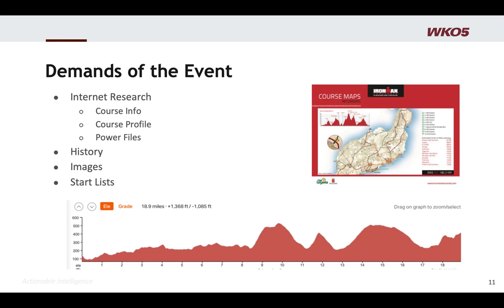Also, a lot of athletes race the same event year in, year out — don't forget their own history, that's very powerful. Don't be afraid to pull images or videos; so many people use onboard cameras from races. If you Google search them, you can get great pictures or videos. I would also look at start lists — go back to the competitive demand. Who are you racing, who typically races at this event? Look at last year's start list and last year's data. That gives you really good insight into the demands of the event.